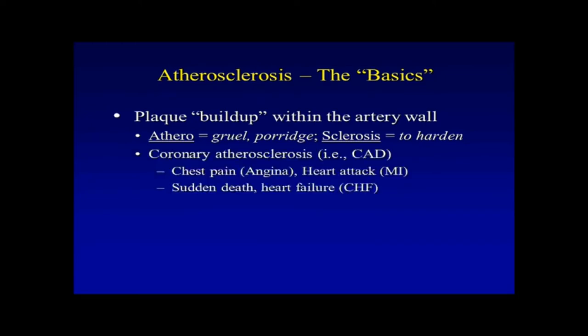The most common and major source of morbidity and mortality is related to coronary atherosclerosis — plaque buildup in the coronary arteries, or what we call CAD, coronary artery disease. The typical manifestations include chest pain, or medically what's called angina, from atherosclerosis in your coronary arteries limiting blood flow. It can lead to heart attacks, and a complication of heart attacks is sudden death and heart failure, which is really where the morbidity and mortality come from.